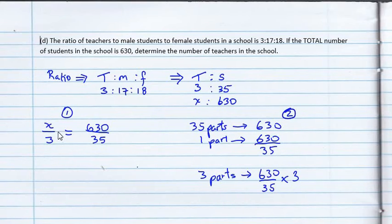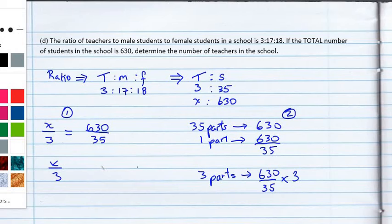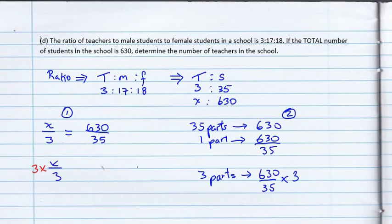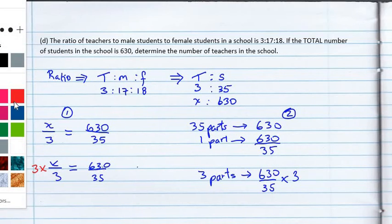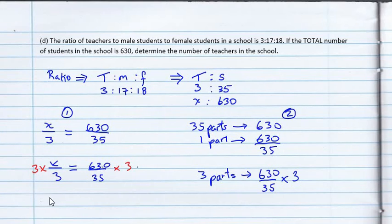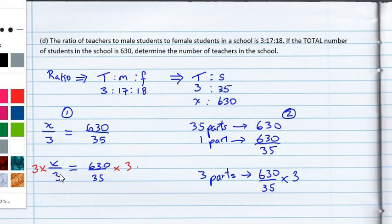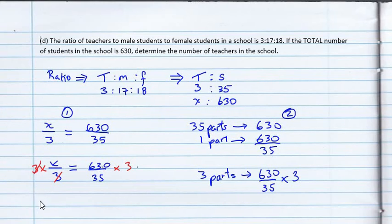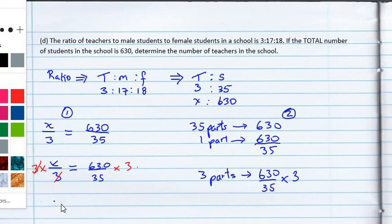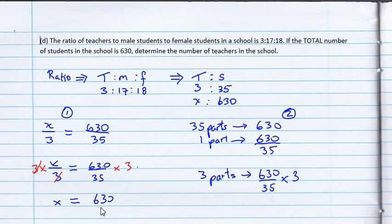Now, of course, if we would have solved for x here, we would have gotten something similar. Let's see. We want to find x, so we're going to isolate the x. So, we'll multiply both sides of this equation by 3. Multiplying this side by 3, so what will happen? This 3 will cancel with this 3. And we ended up with x equals 630 over 35 multiplied by 3.